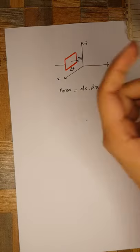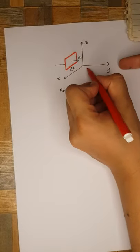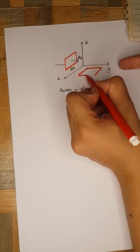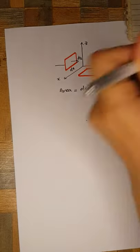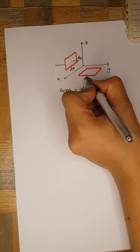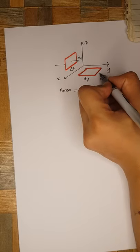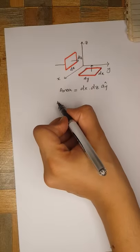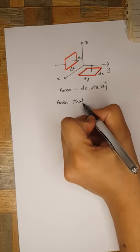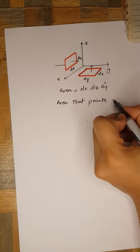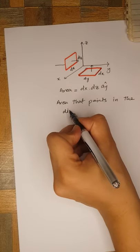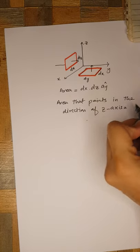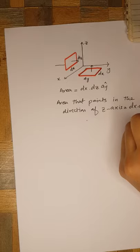Similarly, if you are in the xy-plane and move along the y axis with differential length dy and along the x axis with differential length dx, the area dy·dx points upward in the direction of the z axis. So the area pointing in the direction of âz equals dx·dy.